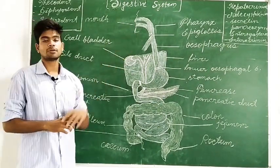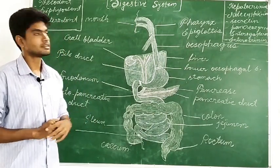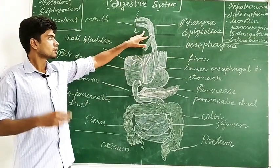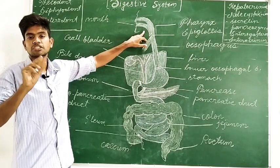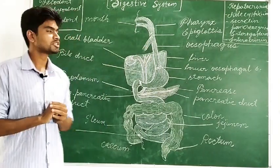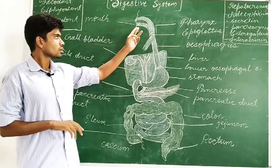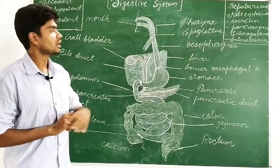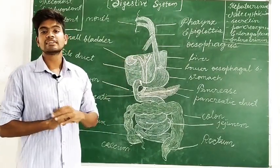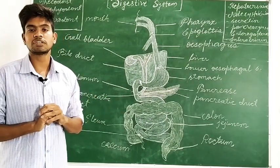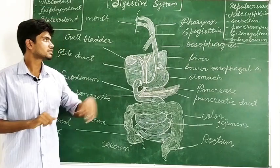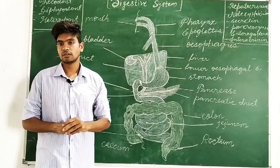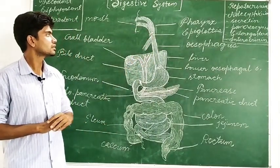After the process of mastication, when saliva is mixed with the food, it becomes a small ball-like structure called a bolus. During mastication, 30% of starch is hydrolyzed with the help of salivary amylase present in the saliva. After that, when the food becomes a bolus, it travels down the alimentary canal and is pushed into the pharynx by the tongue.